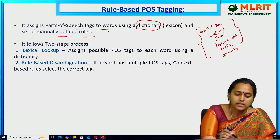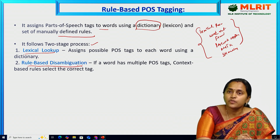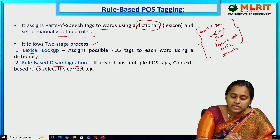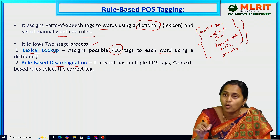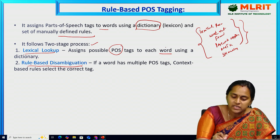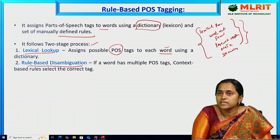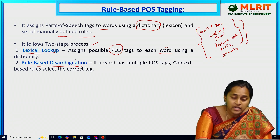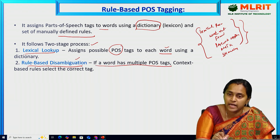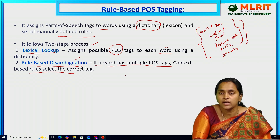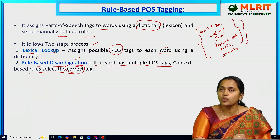This can be done in a two-way process. The first one is lexical lookup and the second is rule-based disambiguation. Lexical lookup means we are assigning possible POS tags to each word using a dictionary. Rule-based disambiguation means — if a word has multiple POS tags, context-based rules select the only correct tag. That means from a sentence containing multiple POS tags, we select only the particular correct tag.